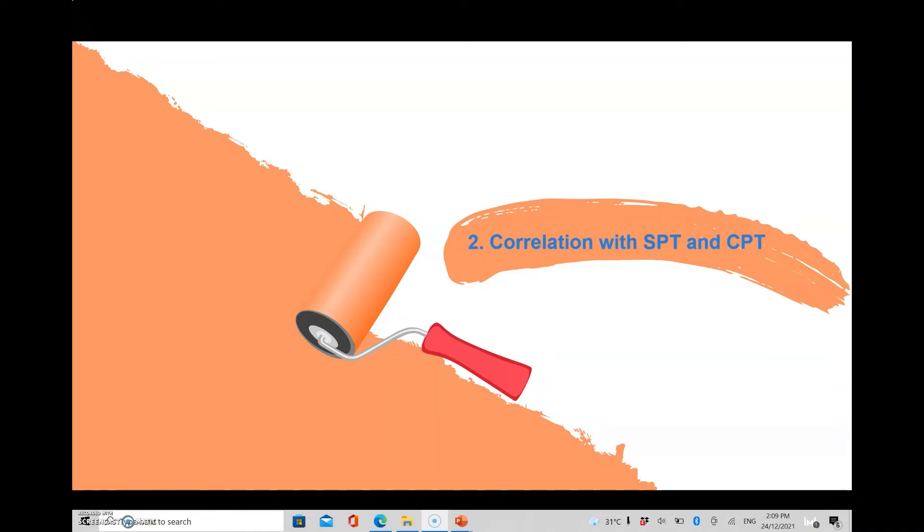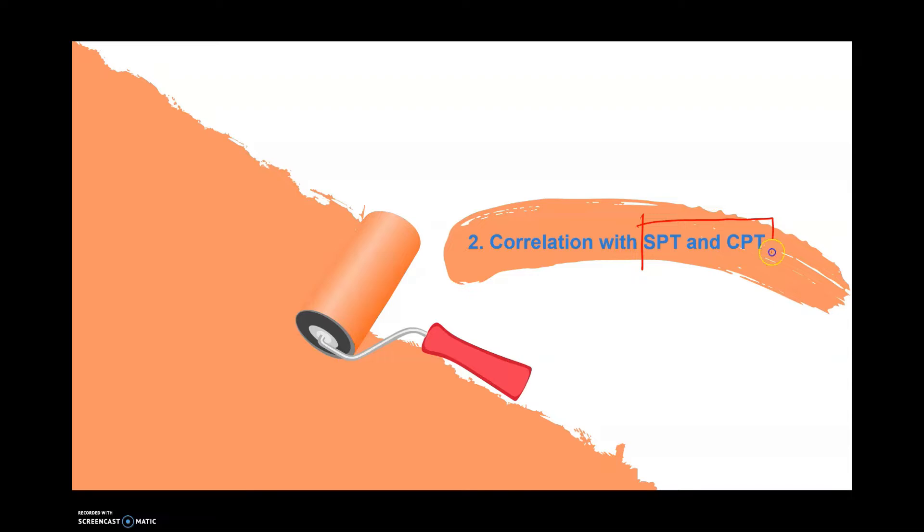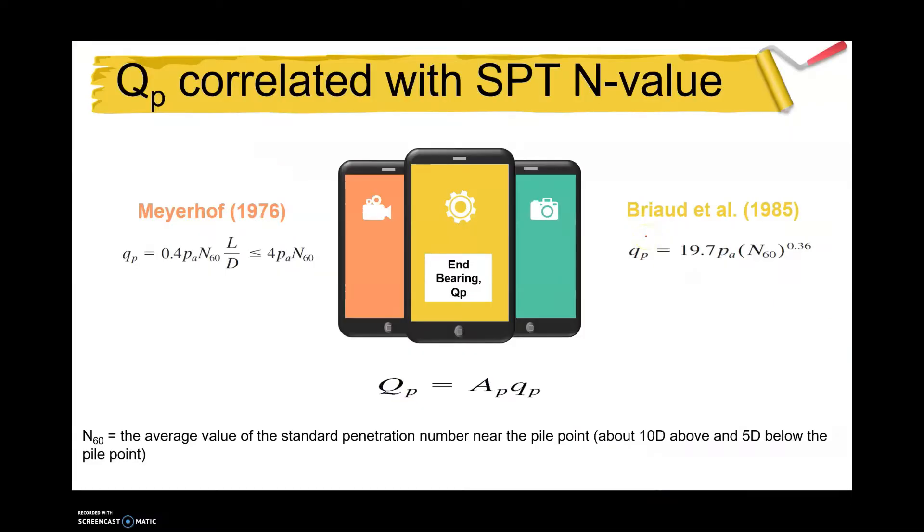Now we determine the pile bearing capacity by consideration of SPT N-value. The first part is determining the value of qp based on the N-value. You can use the Meyerhof method using this expression, where N60 is the average value of the standard penetration number near the pile point.